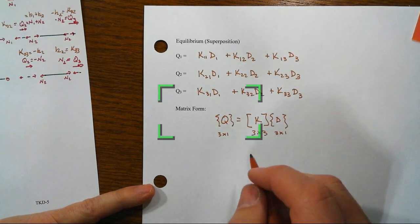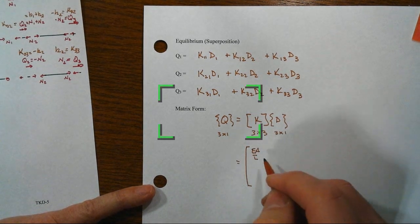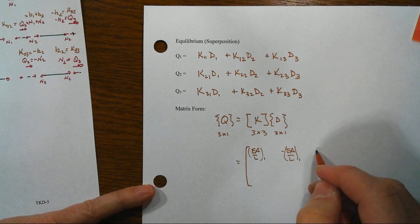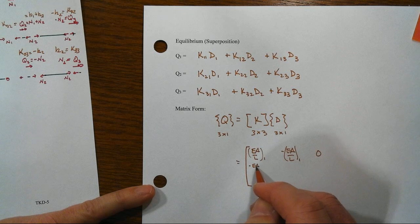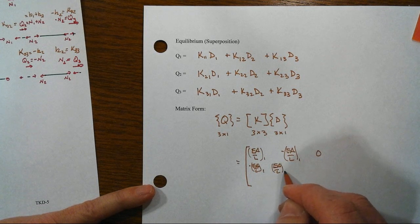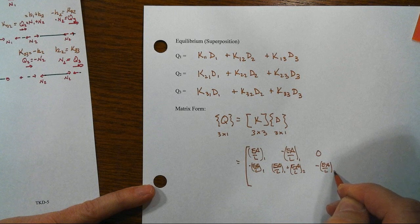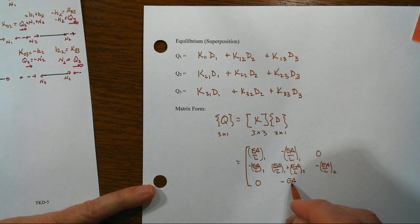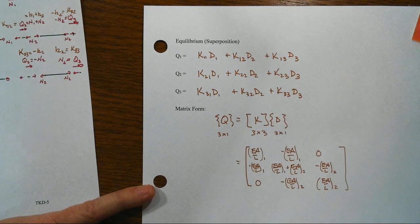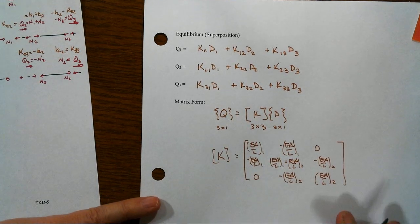Now, what this looks like in this very specific case is that we would have in the K11 location, we'd have EA over L for member 1. Then we had minus EA over L for member 1, right there, and a 0 in that location. Then we had minus EA over L here for member 1, and then in this location, we had EA over L for member 1 plus EA over L for member 2. And then on the off term, we had EA over L for member 2, the negative, and a 0 here, and then we finish it off like so. That was our stiffness matrix for our system. This is the total global system.